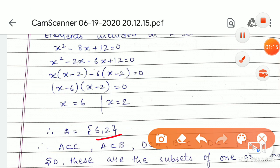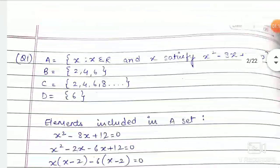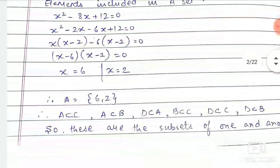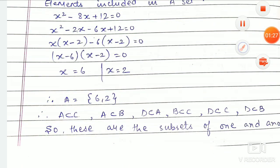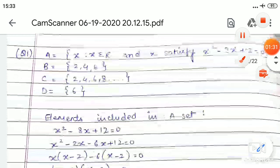6 and 2, now look where 6 and 2 appear. A is a subset of B and A is a subset of C. Now, set D, what's in D?